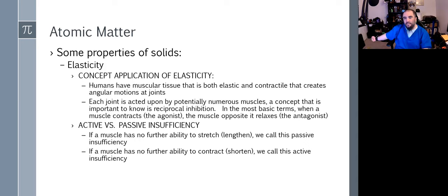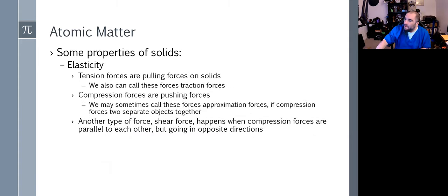In most basic terms, when a muscle contracts, that is called an agonist. There is an opposite muscle that relaxes, called the antagonist. If I do a bicep curl, my bicep is my primary muscle that moves, but my tricep has to relax or otherwise my bicep won't be able to contract. There's this term active versus passive insufficiency. If a muscle can no longer stretch, can't get any longer, it is passively insufficient. If the muscle can no longer contract or shorten, it is becoming actively insufficient. You do need to know that for your test.